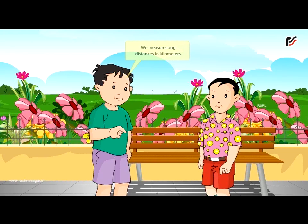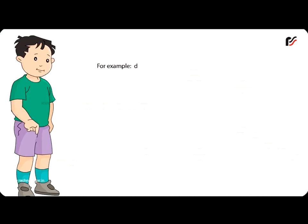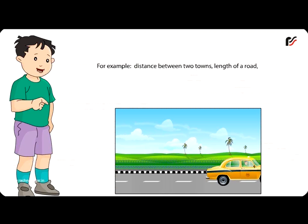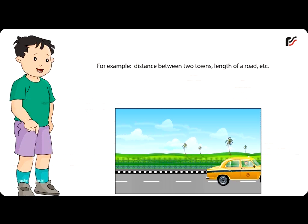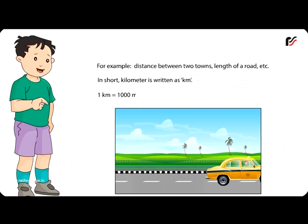We measure long distances in kilometers. For example, the distance between two towns, the length of a road, etc. In short, kilometer is written as km. 1 kilometer is equal to 1000 meters.